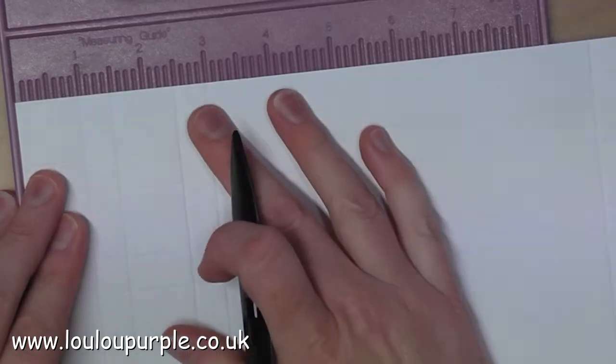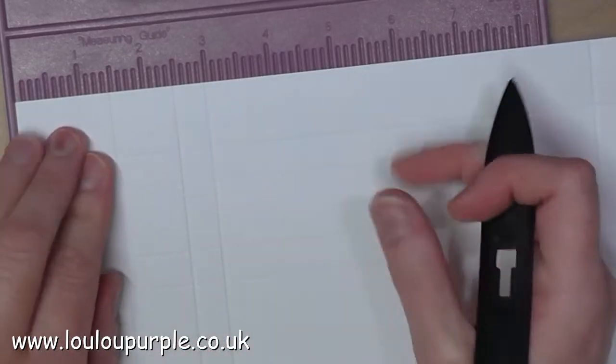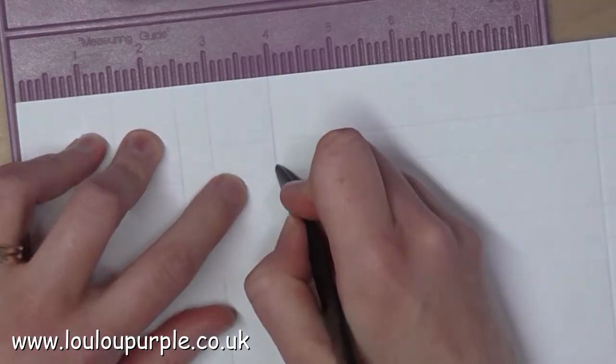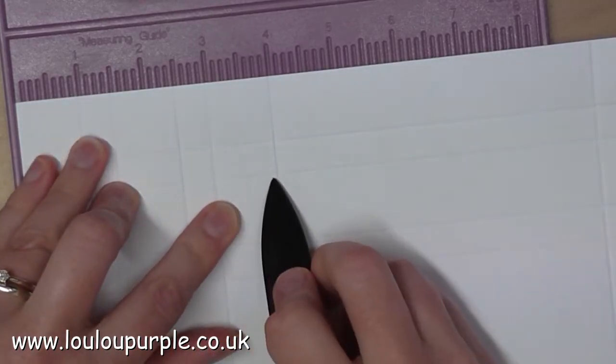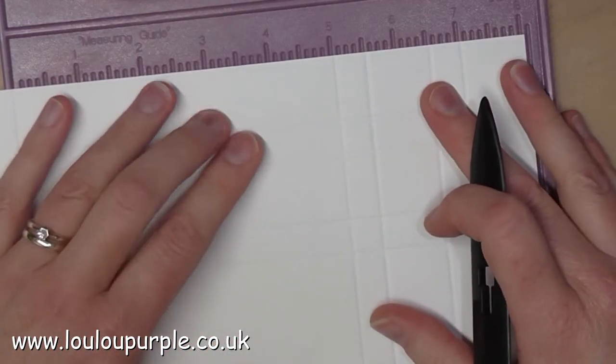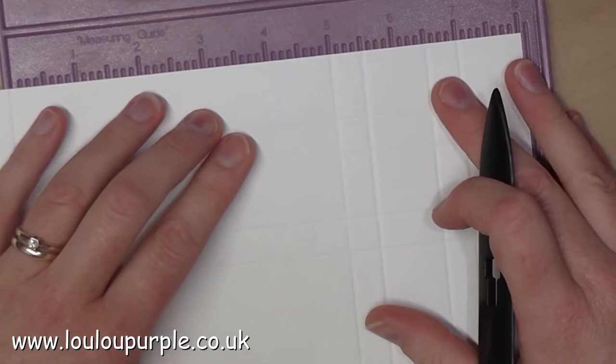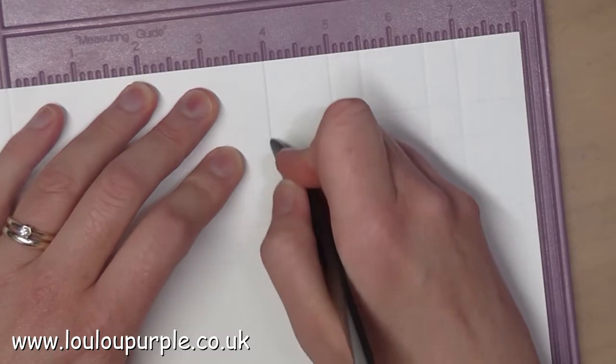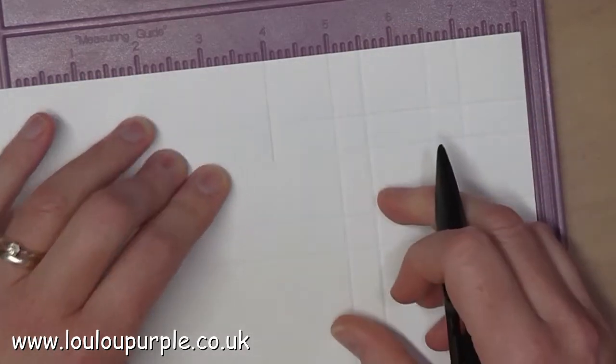You will then need to score a line at the four inch point down to the second score line. You then need to repeat this on the other side, so one inch in from your last score line, score down to the second score line. You will then need to turn your piece of card around and do the same on the opposite side.